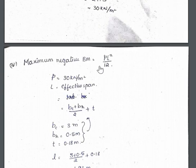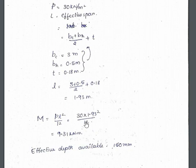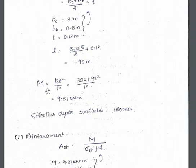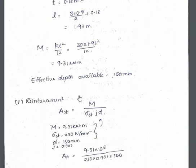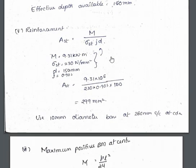The maximum negative bending moment formula is PL²/12. The effective span L = B_C + B_H/2, where B_C = 3.5 m, B_H = 0.5 m, plus the thickness of 0.18 m, giving an effective span of 1.93 m. This is the mean effective span for the hopper. Substituting into PL²/12, the maximum bending moment is 9.31 kilonewton-meters.